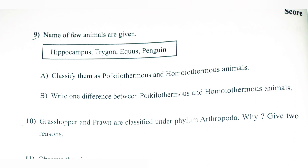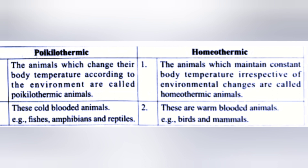Question 9: Names of a few animals are given. a. Classify them as poikilothermous and homeothermous animals. b. Write one difference between them. Answer: a. Poikilotherms — Hippocampus, Trigon. Homeotherms — Penguin, Equus. b. Poikilotherms are cold-blooded animals that change body temperature according to the environment. Homeotherms are warm-blooded animals that maintain constant body temperature irrespective of environmental changes.